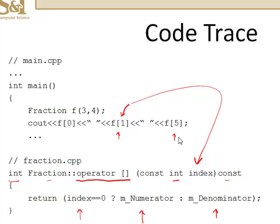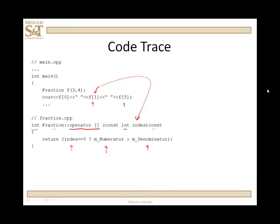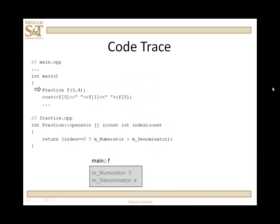Output should be 3, 4, and 4. So let's go through a code trace and see what it looks like. Fraction is 3 fourths, numerator is 3, denominator is 4.